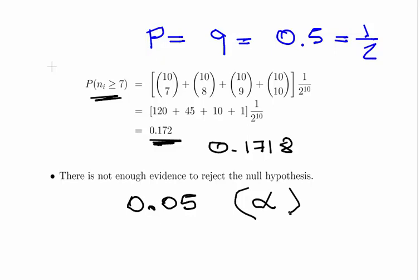Essentially, the p-value is not less than 0.05. So we fail to reject the null hypothesis. There's not enough evidence to reject the null hypothesis.